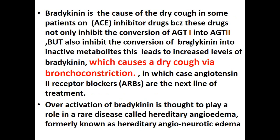When we give ACE inhibitors, angiotensin 2 — which is a potent vasoconstrictor — is formed in the lungs where angiotensin 1 is converted to angiotensin 2 by the enzyme ACE. If we inhibit this enzyme, we block the conversion of angiotensin 1 into angiotensin 2, so the vasoconstriction effect is not there, there will be vasodilation, and the patient will move from hypertension to hypotension. That is how ACE inhibitors are used to treat hypertension.